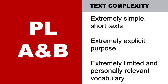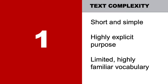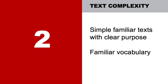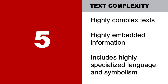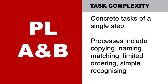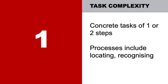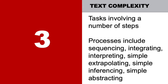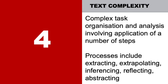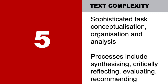The third variable is text complexity. At the lower levels, texts are extremely explicit, short and simple; they move on to be more complex or highly complex with a lot of embedded information at the higher levels. The fourth variable is task complexity — what is being asked of the performance. Concrete tasks of a single step at very low levels, then moving through processes such as naming, copying, interpreting, some simple interpreting, then some extracting, inferencing, and by level five sophisticated task conceptualisation.